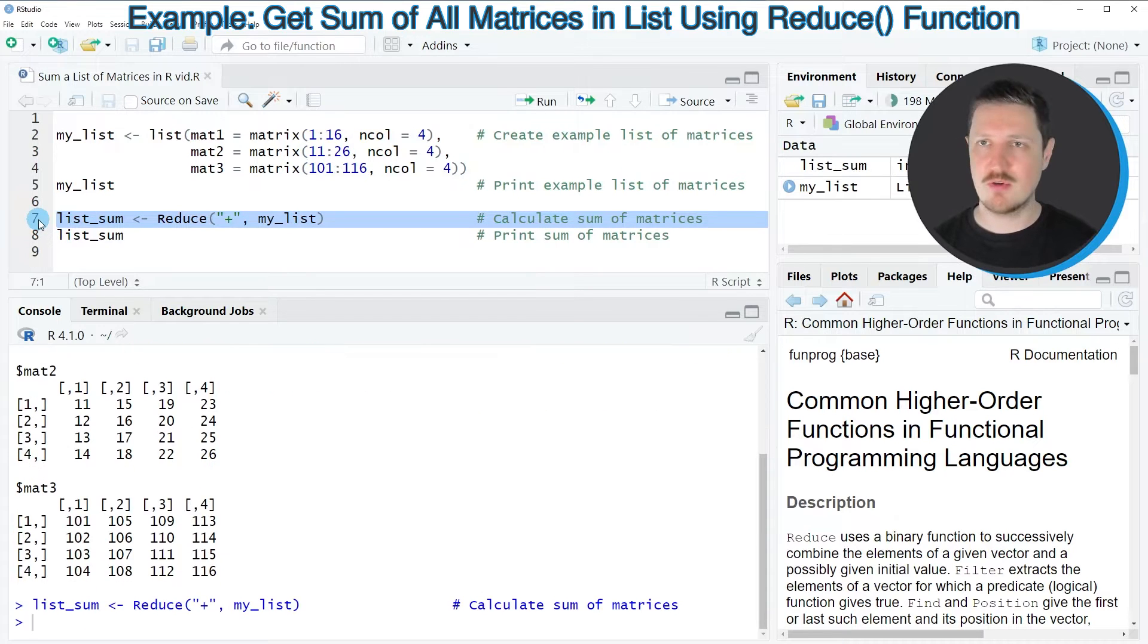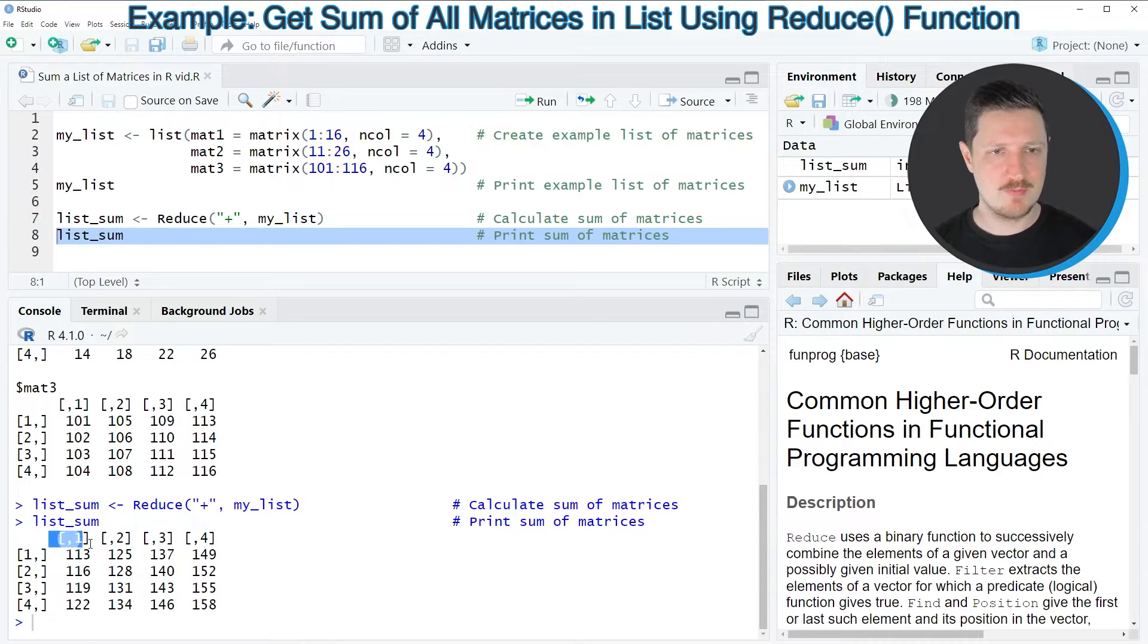After running line 7 of the code, this new data object called list_sum is appearing at the top right, and we can print this data object to the bottom in the RStudio console by running line 8 of the code. Then you can see that we have created a matrix object which contains the sum of our three matrices that we have stored in our input list.